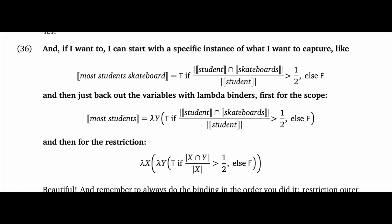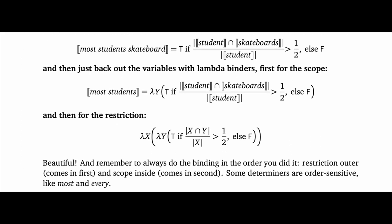And now I can only applaud. Beautiful. But then I have to add: remember to always do the binding in the order that you did it in your example. Restriction outer because it comes in first, and scope inside because it comes in second. That's important because some determiners are order sensitive with respect to their arguments, like most and every.